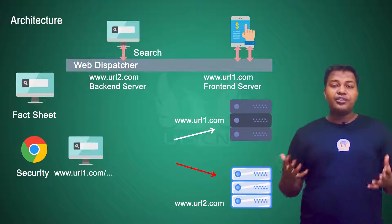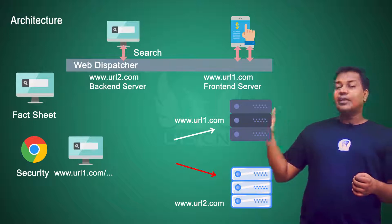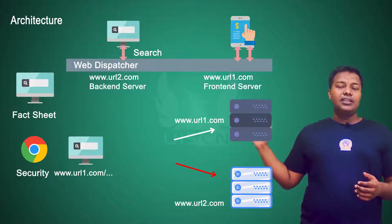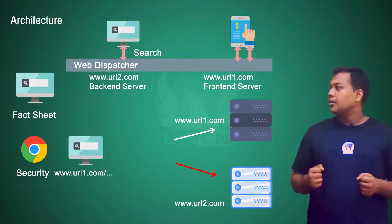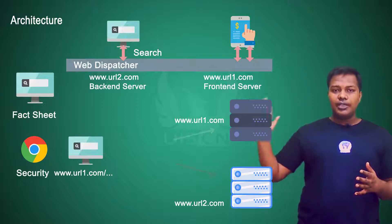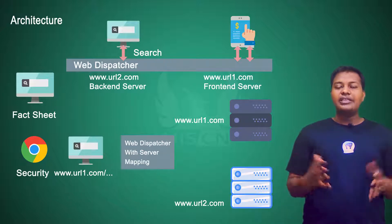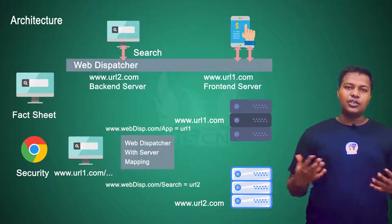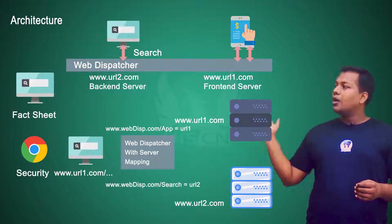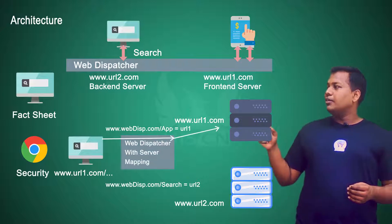The browser treats that as a different origin issue and can sometimes block those requests. For example, if the application is hosted in server one and is trying to get data from server two, those requests can be blocked. To solve this, we introduce a new server in between, which is what we call the web dispatcher. Web dispatcher is common in the internet world — it can be SAP's web dispatcher or one of multiple other types available.